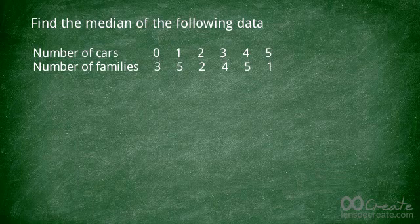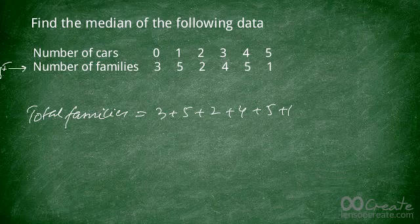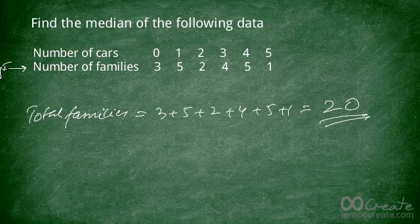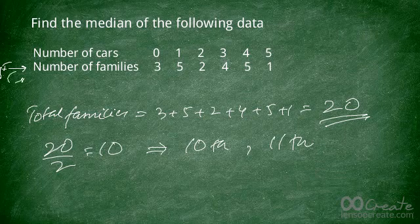Here's the solution. First, find the total number of families by summing the frequencies: 3 + 5 + 2 + 4 + 5 + 1 = 20. The total frequency is 20, which is even, so we have two values in the middle. 20 / 2 = 10, meaning we're looking for the 10th and 11th positions. Now find the cumulative frequency.